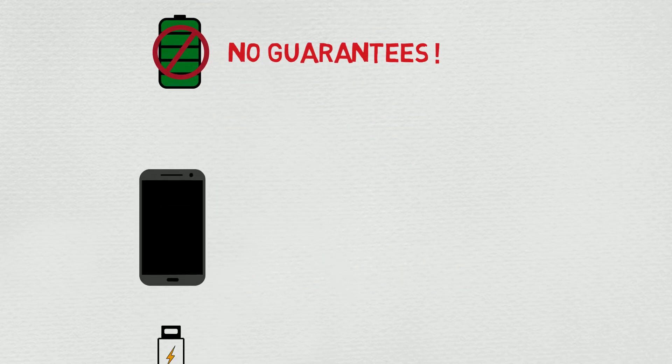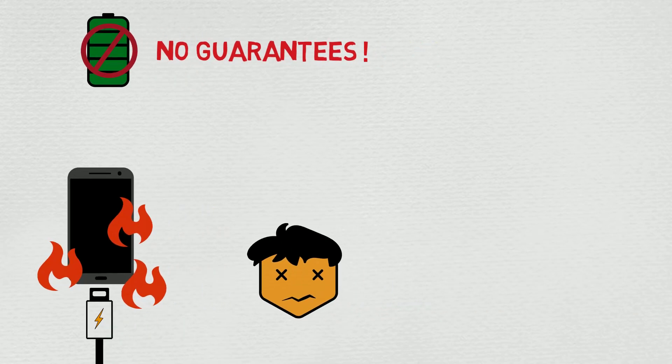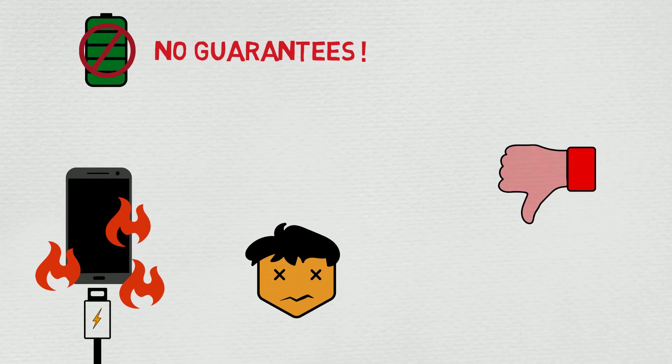So if it seems too cheap to be true, it probably is. Number two: don't charge your phone in extreme temperatures. Lithium-ion batteries have a minimum operating temperature of 32 degrees Fahrenheit or zero degrees Celsius, and a maximum operating temperature of 113 degrees Fahrenheit or 45 degrees Celsius while charging.